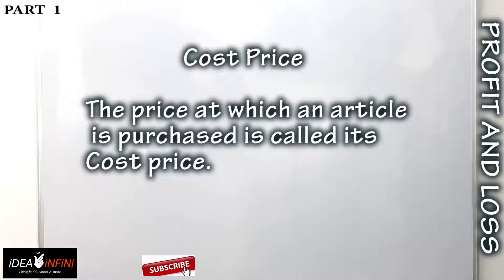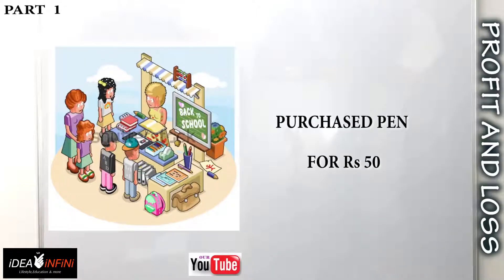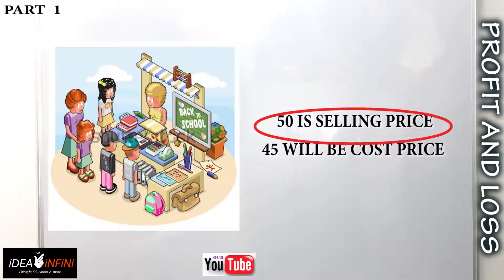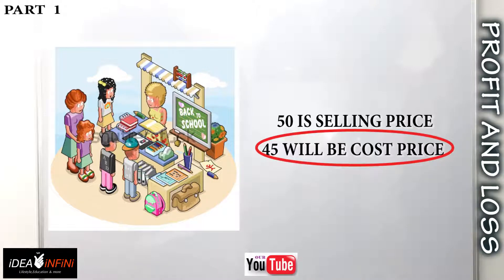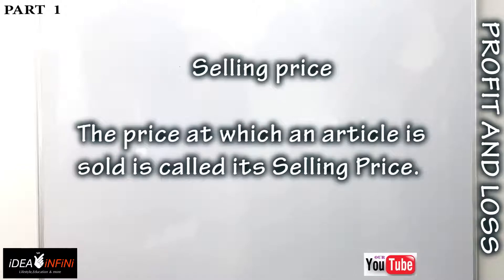Our first term is cost price. Cost price is the price at which an article is purchased. Suppose I buy a pen from a shopkeeper for rupees 50 — that is the selling price, not the cost price. The cost price is what the shopkeeper had paid. For example, if he is selling for rupees 50, he might have purchased it for rupees 45. So the cost price of the pen was rupees 45.